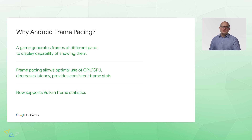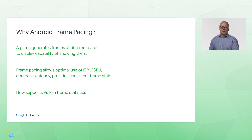Games generate frames at different paces relative to the display capability of showing them. Frame pacing allows optimal use of CPU and GPU, decreases latency, and provides consistency of frame statistics. Now it supports Vulkan frame statistics.